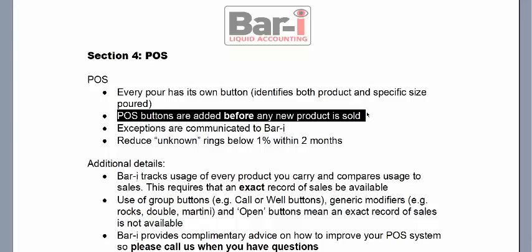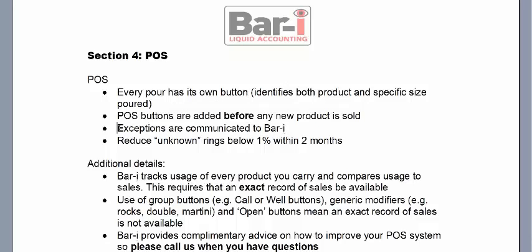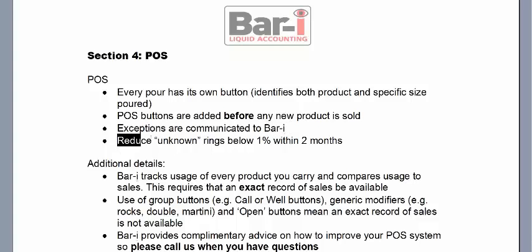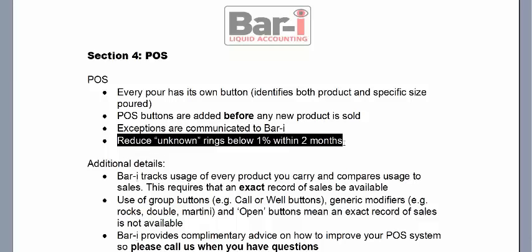Point of sale buttons need to be added before any new product is sold. If you're going to sell a product, you'll eventually need a button for it — it's much cleaner to do that beforehand. With a little forethought and organization, if you've decided to bring on a new product, it's very important to put a point of sale button in the system before it goes onto the floor. Otherwise, staff won't know how to charge for it correctly, creating a bad experience and possibly costing you money through undercharging. Our goal is to reduce unknown rings to below 1% of sales within two months.